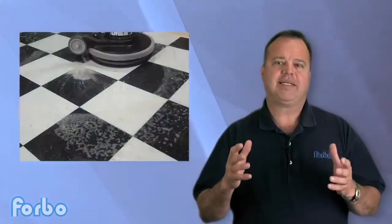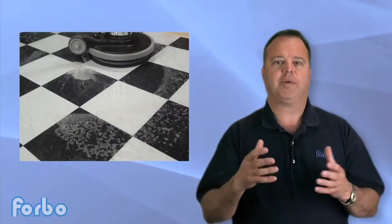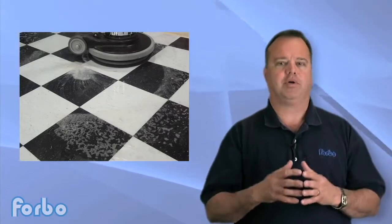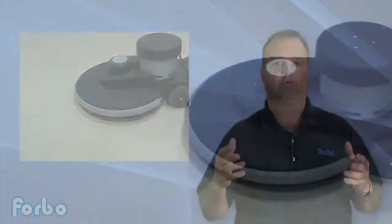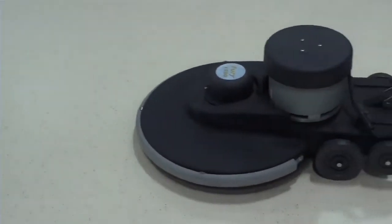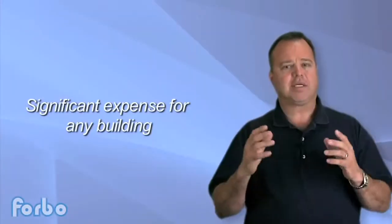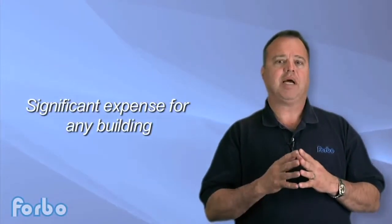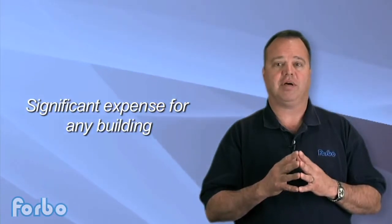Compare that to VCT, which requires initial stripping and application of multiple coats of finish or rubber, which requires excessive burnishing and daily maintenance. That can be a significant expense for any building, sometimes as much as the cost of the floor itself.